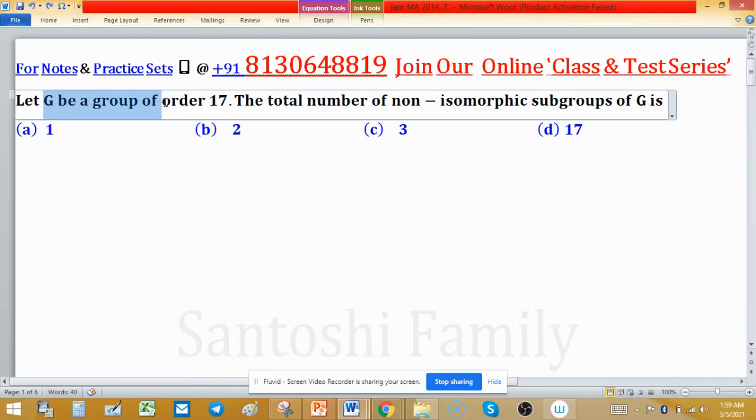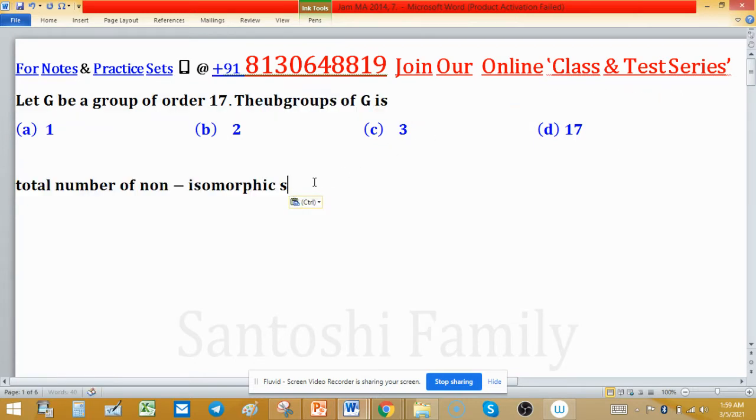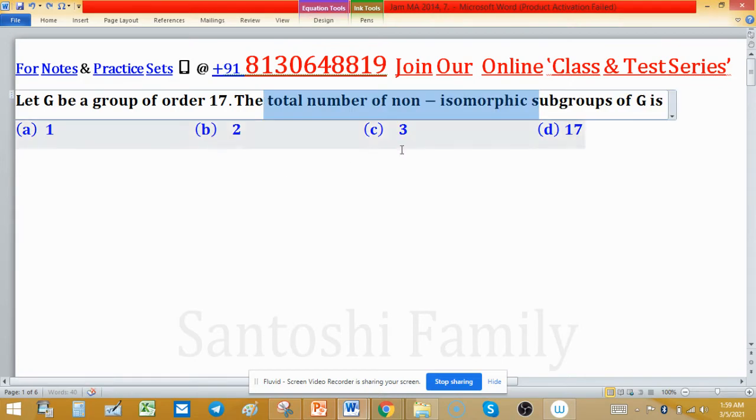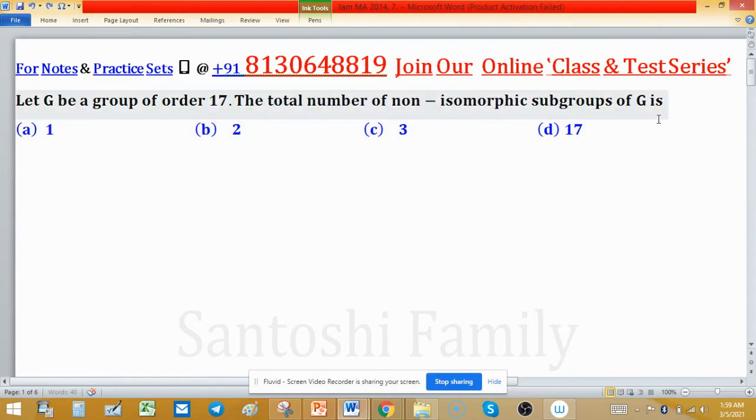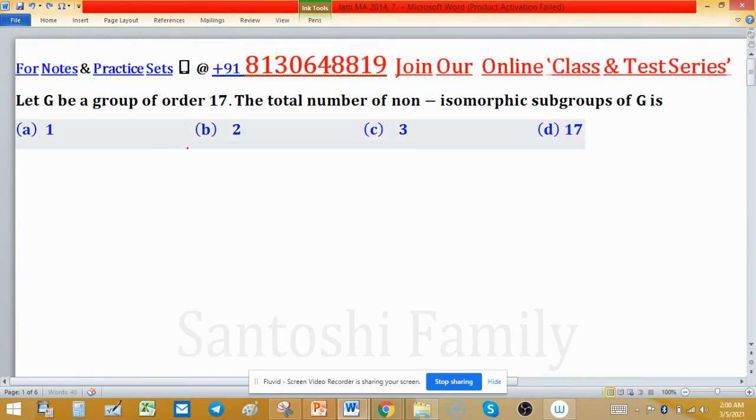Let G be a group of order 17. The total number of non-isomorphic subgroups of G - we need to check how many non-isomorphic subgroups G has. First, we check how many subgroups exist, then whether they're isomorphic or not.